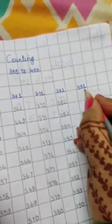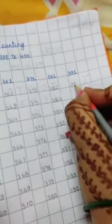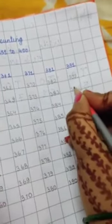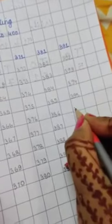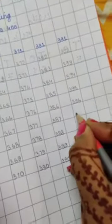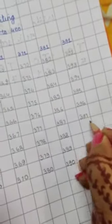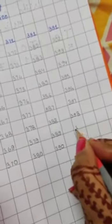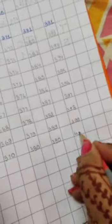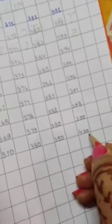Again from the top, 391, 392, 393, 394, 395, 396, 397, 398, 399 and last 4 double 0 that is 400.